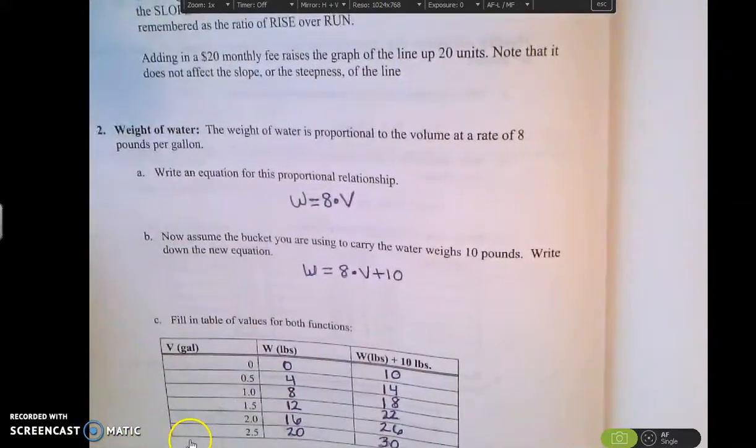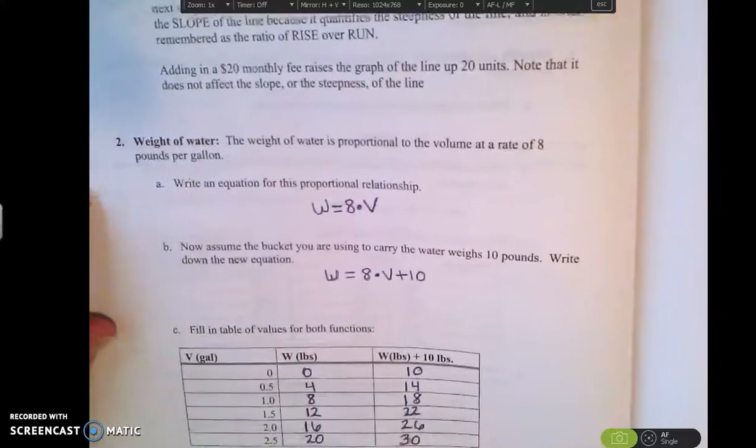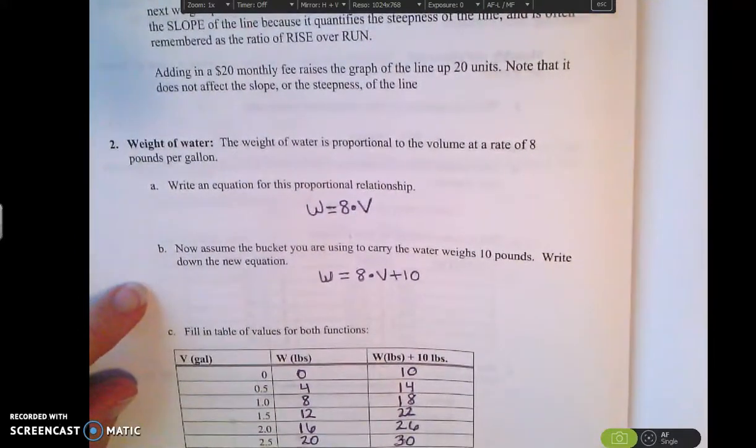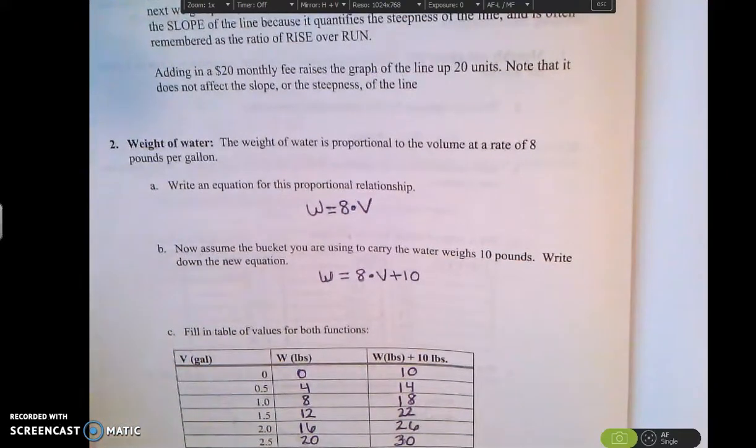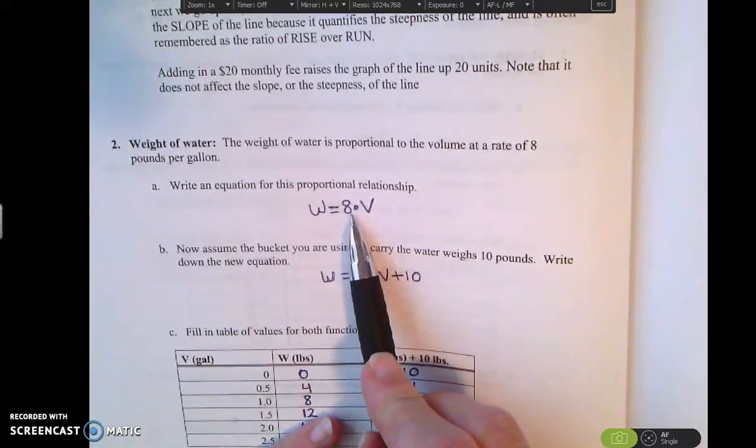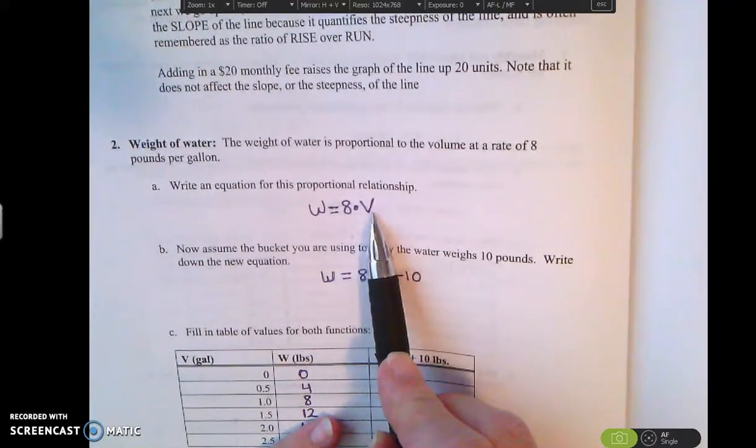So they talk about the weight of water is proportional to the volume at a rate of 8 pounds per gallon. So that means that if I have water in a bucket, every gallon of water that I have equals 8 pounds of weight. So the weight is equal to 8 pounds times the volume.